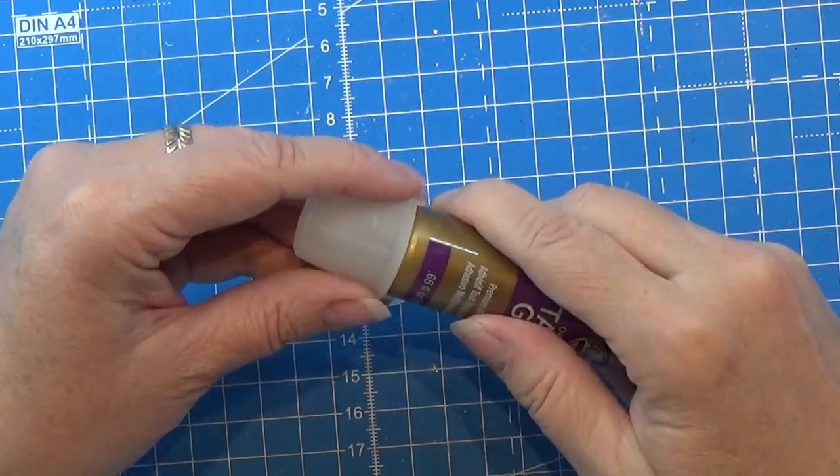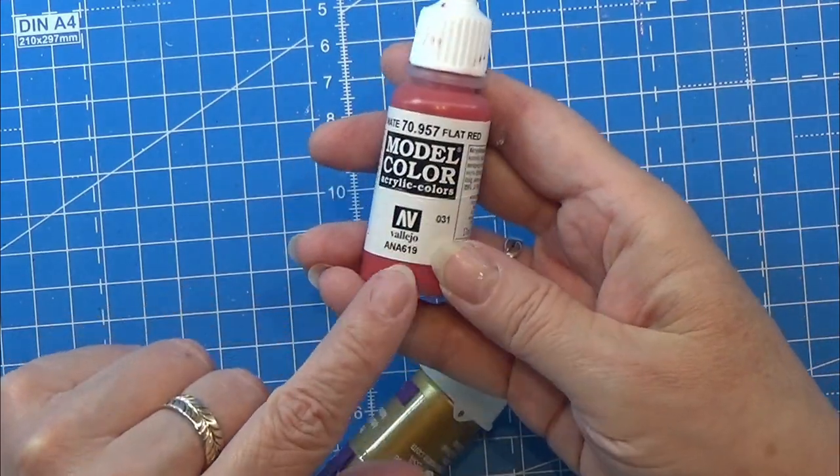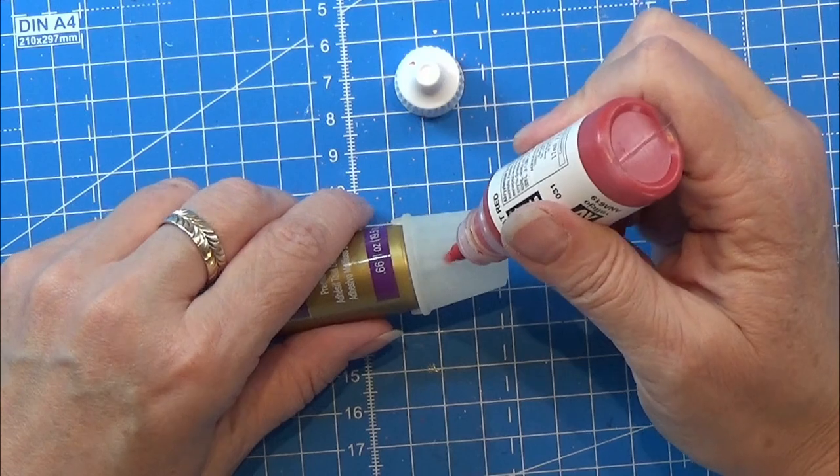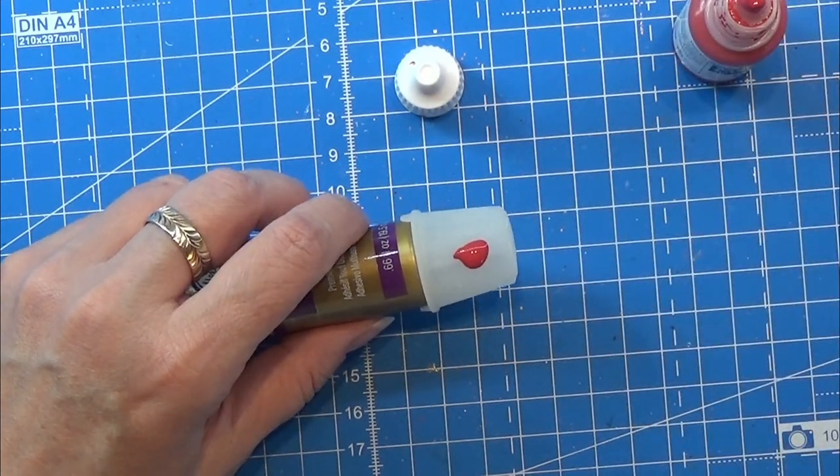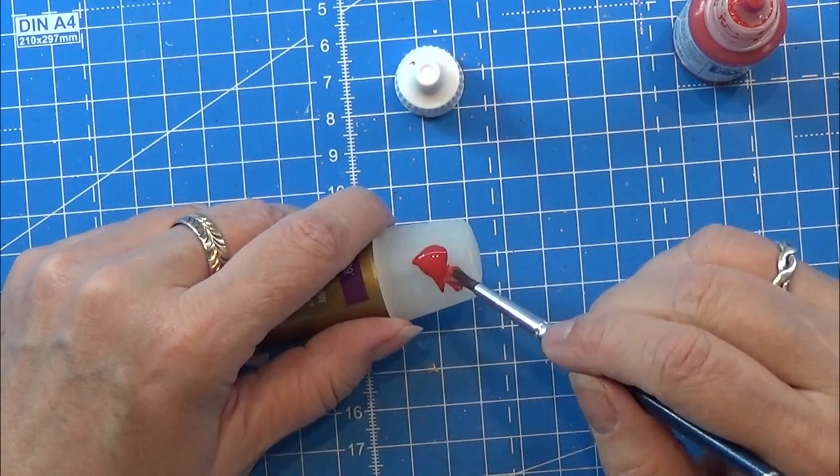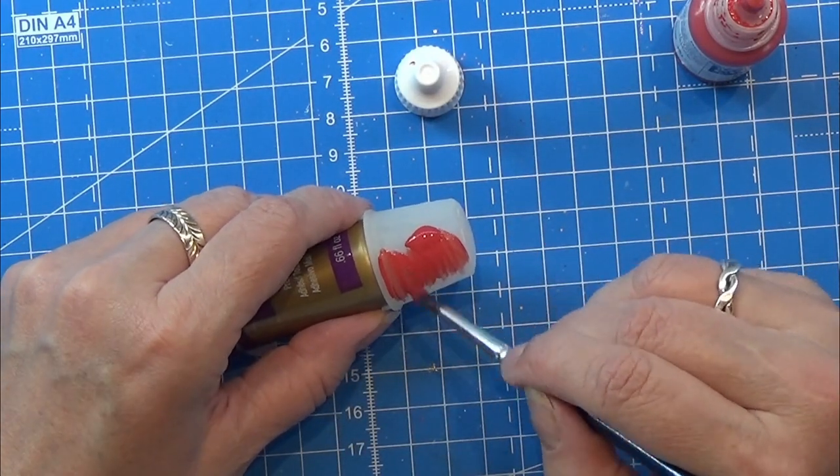They are printed on my Anycubic Photon Mono SE printer, and then of course cleaned and hardened in UV light. Now I am just going to paint this little bucket on the outside.